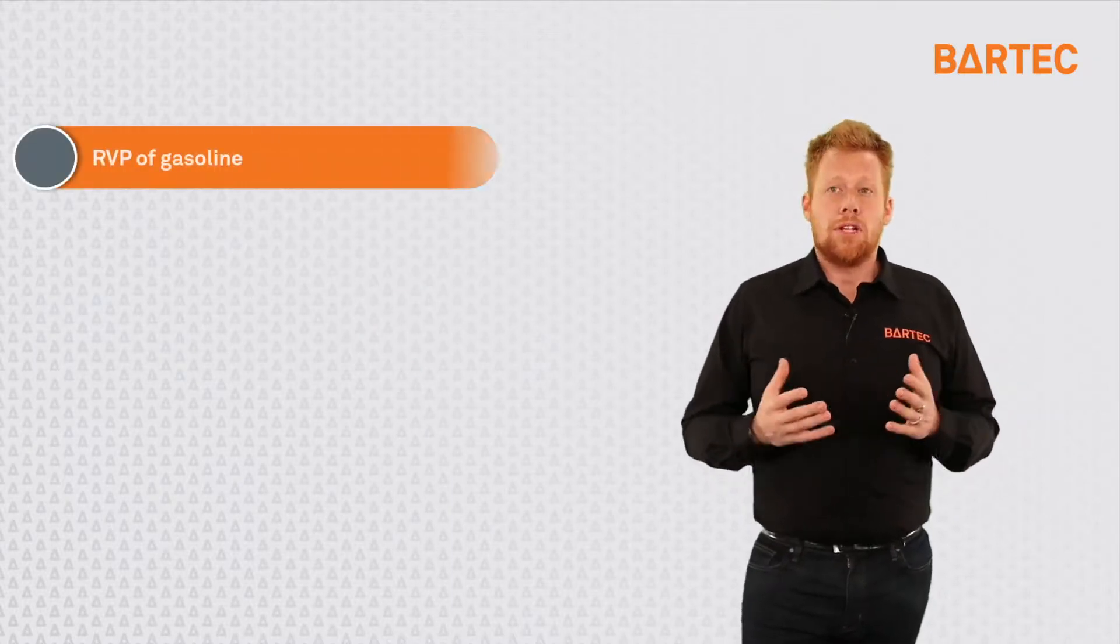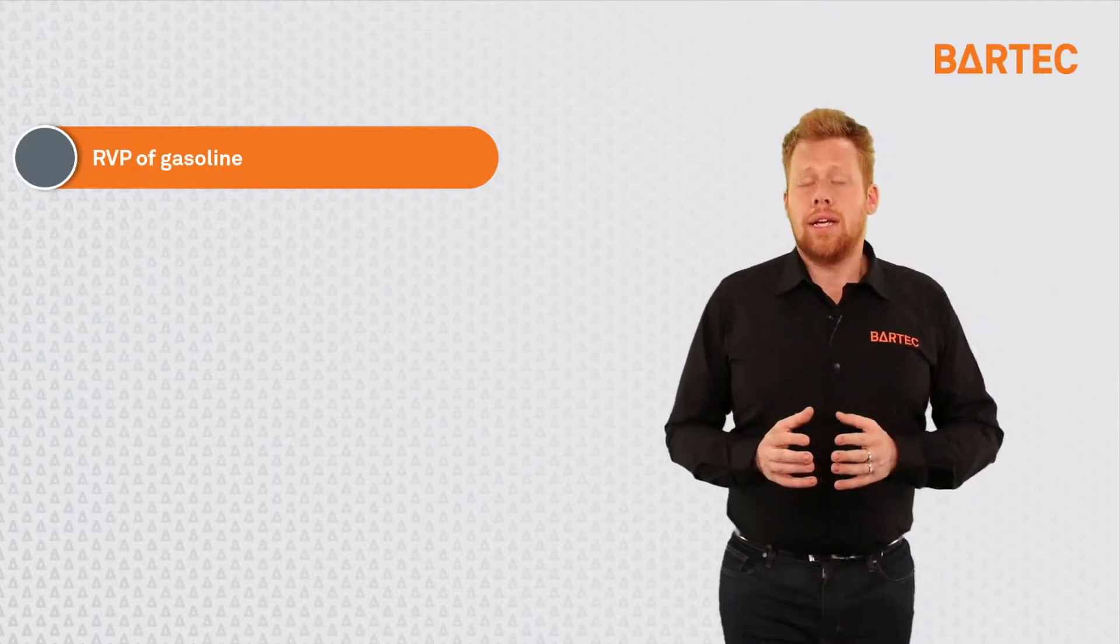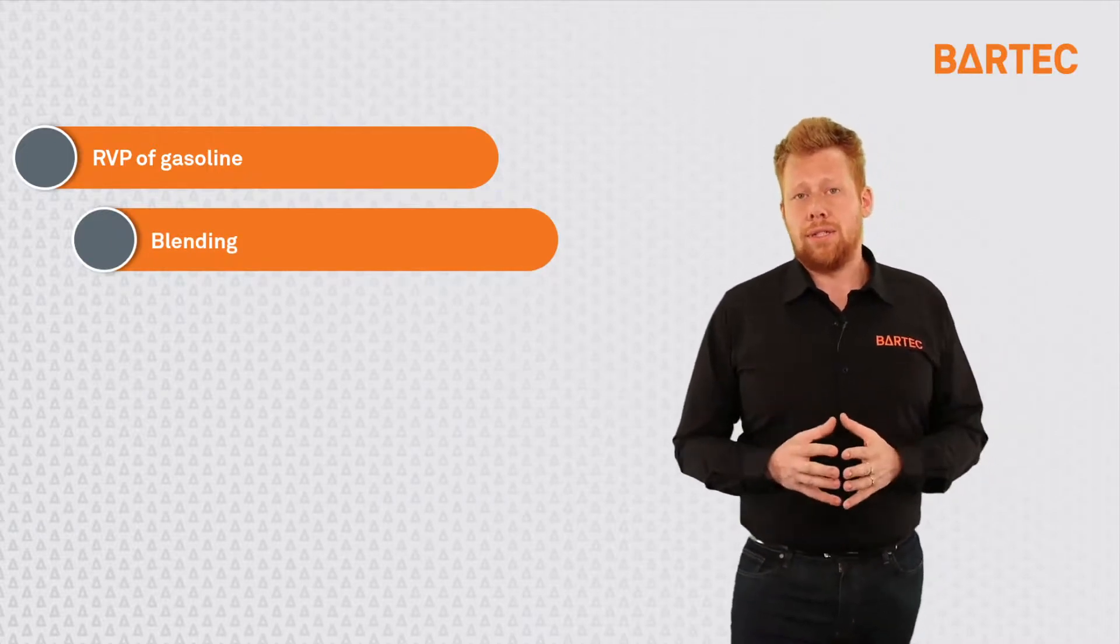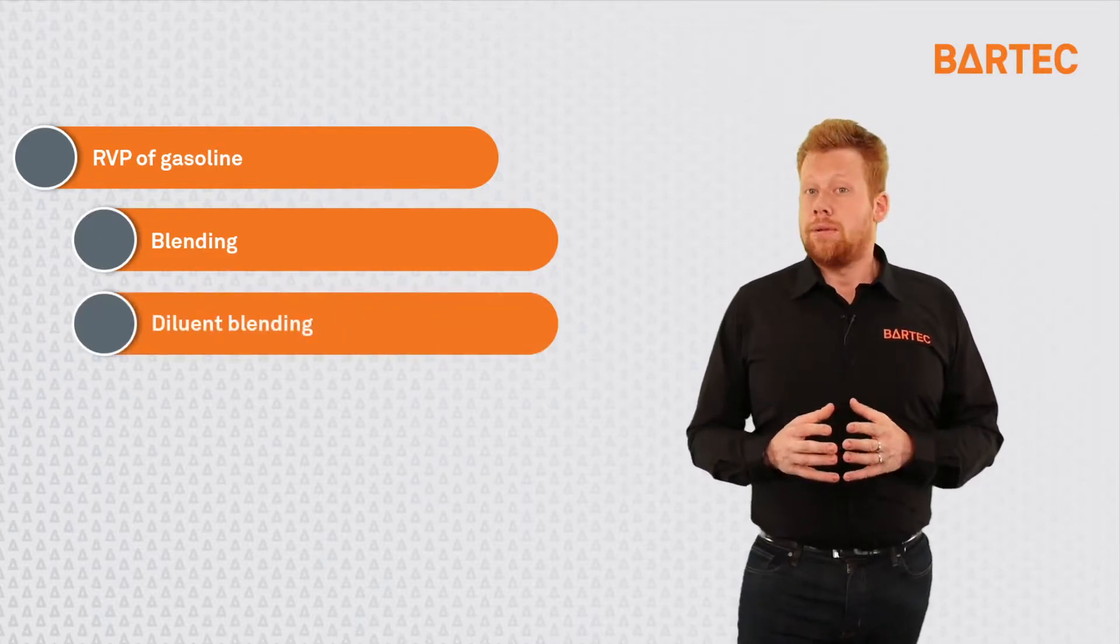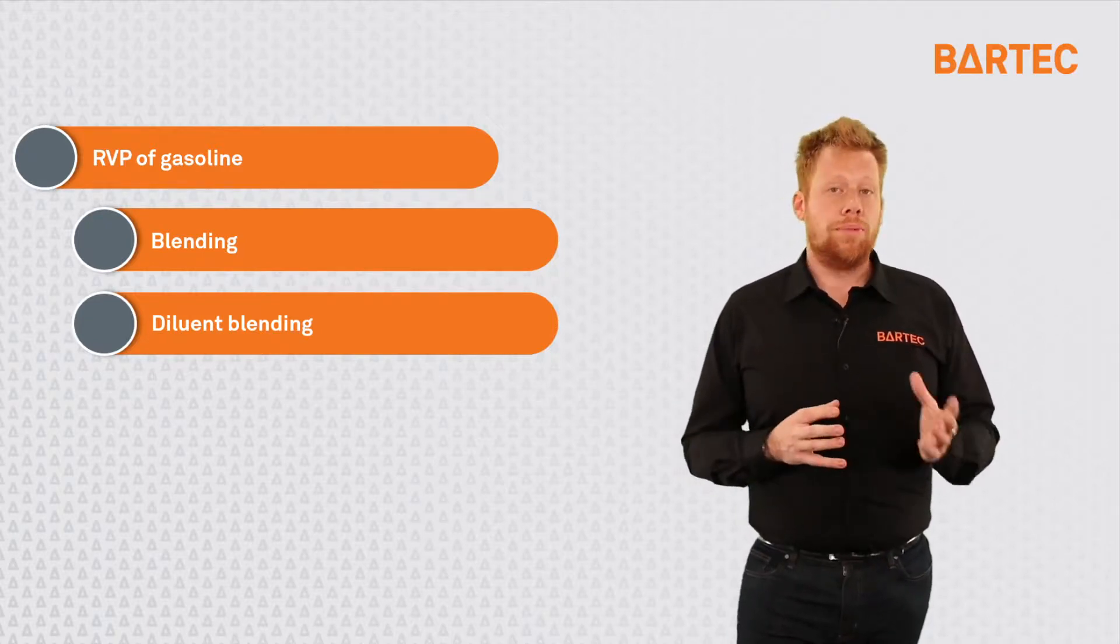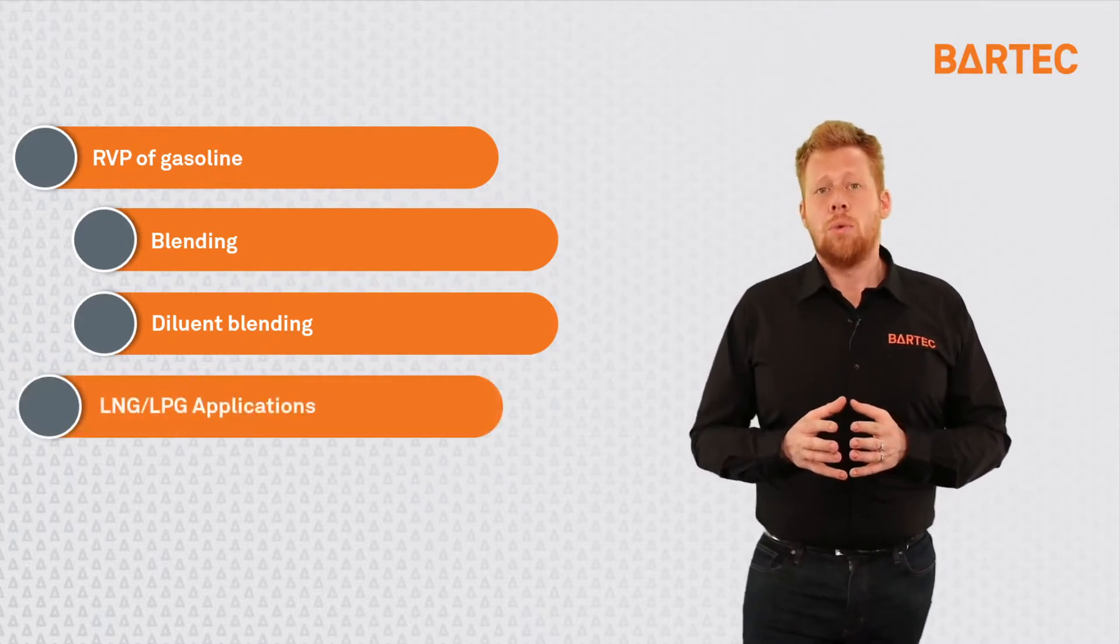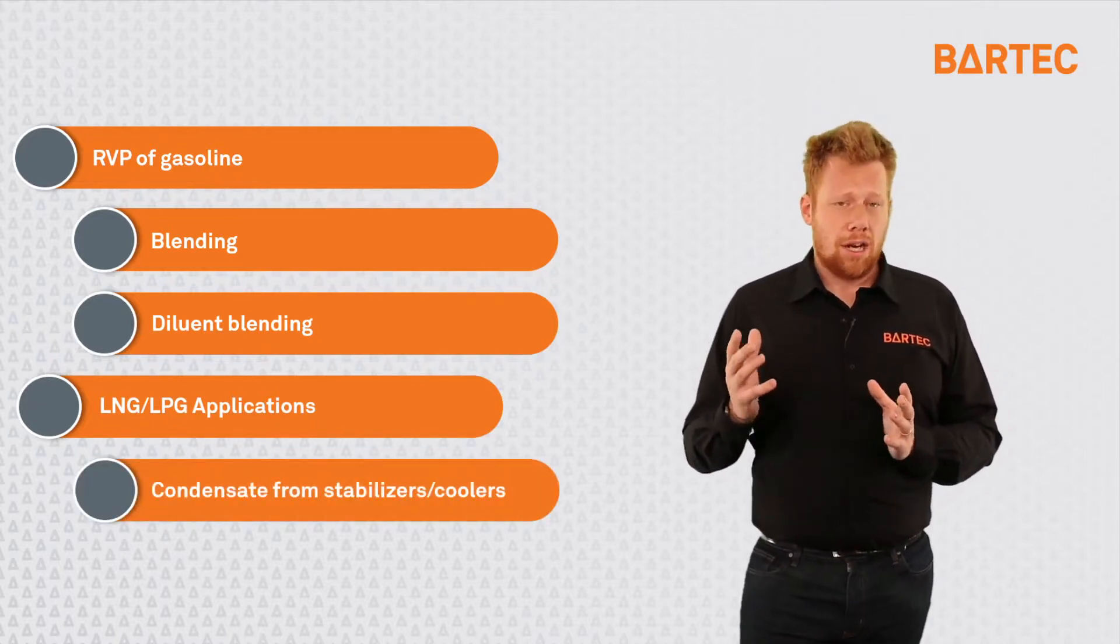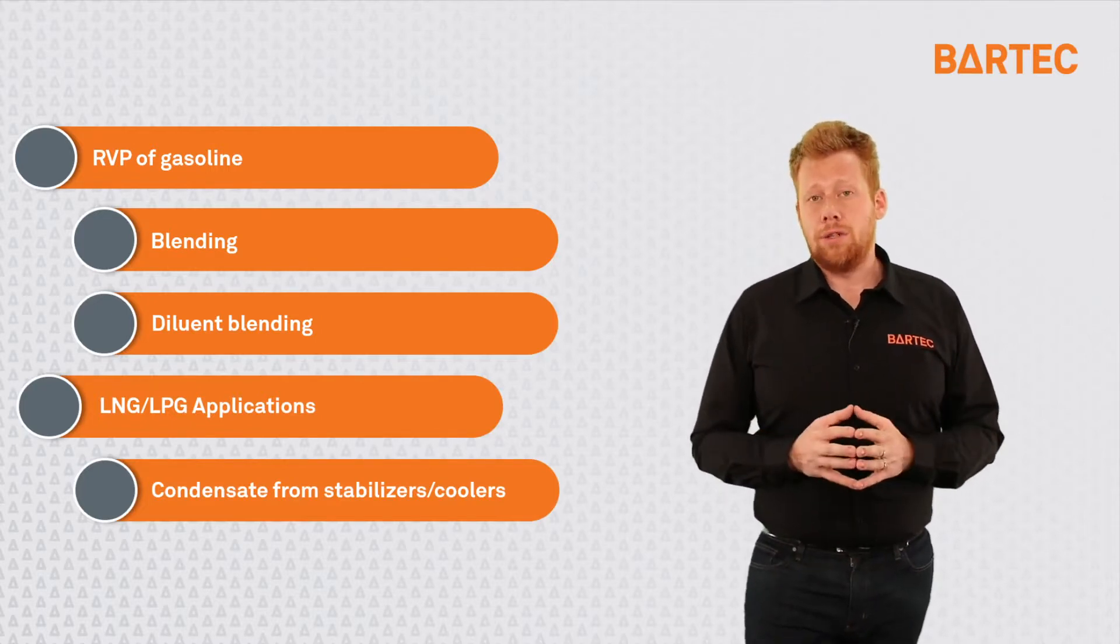Now, some of the applications where the P700 is commonly found. The RVP of gasoline is one of those. There are two subsections. The first one is just regular blending of gasoline, as you would find, for example, at refineries. The other one is RVP of blended gasoline, when ethanol or butane, for example, are injected into the gasoline. Another application would be in the LPG and LNG markets, where we monitor the RVP of condensates coming from stabilizers or coolers before they are used, for example, in the blending of crude.